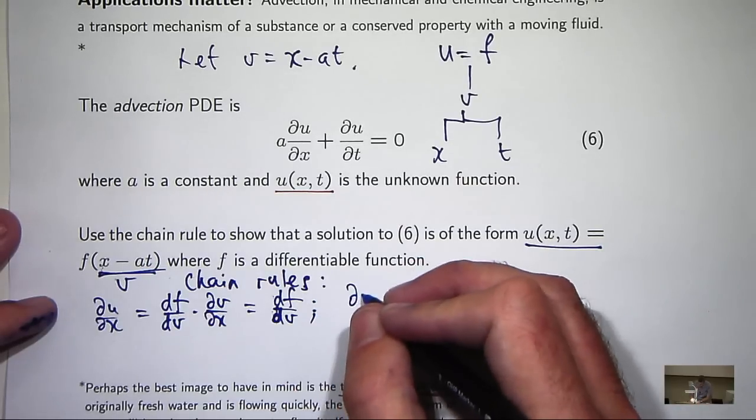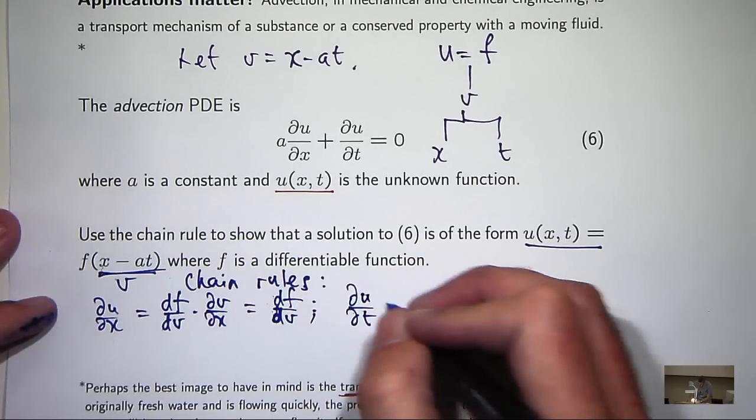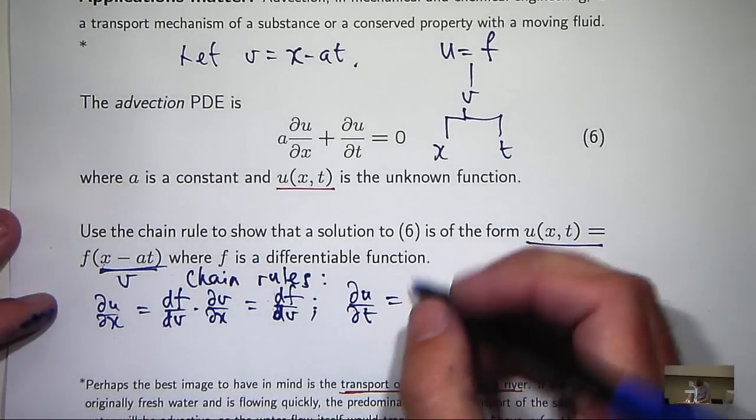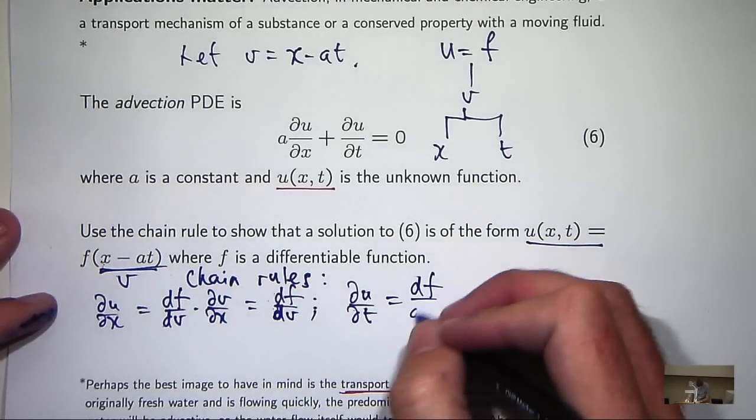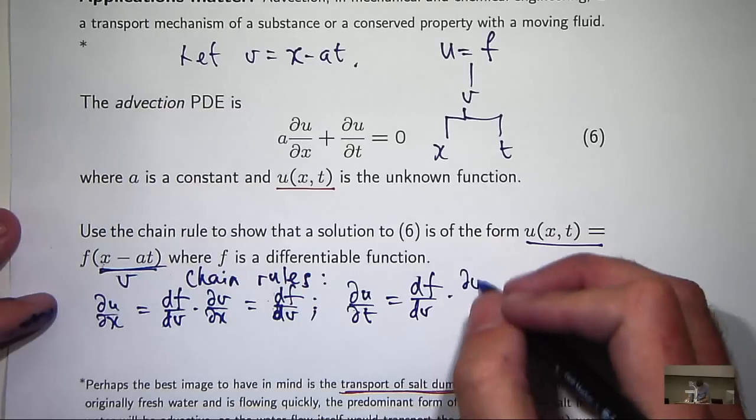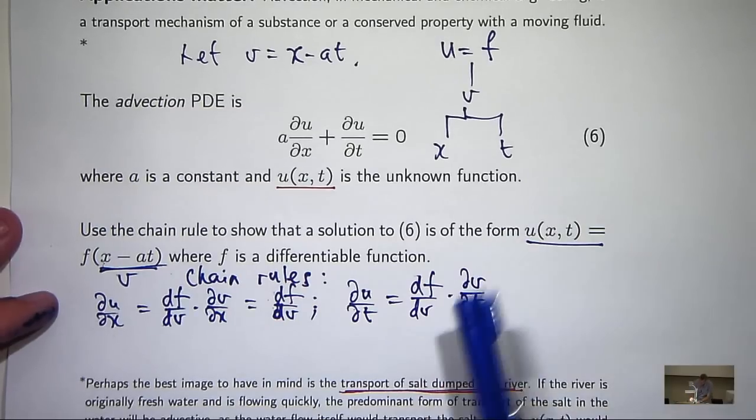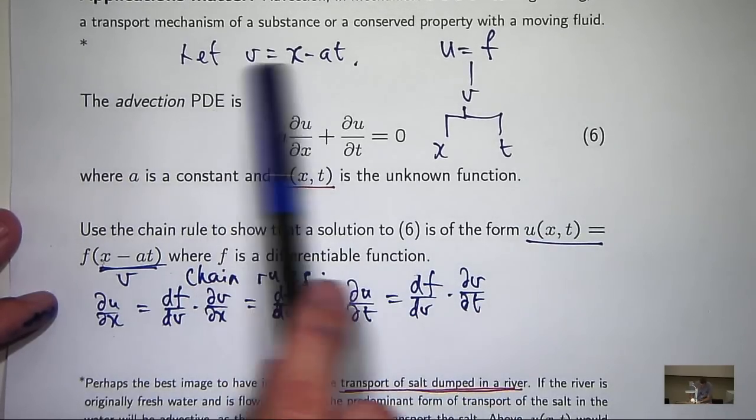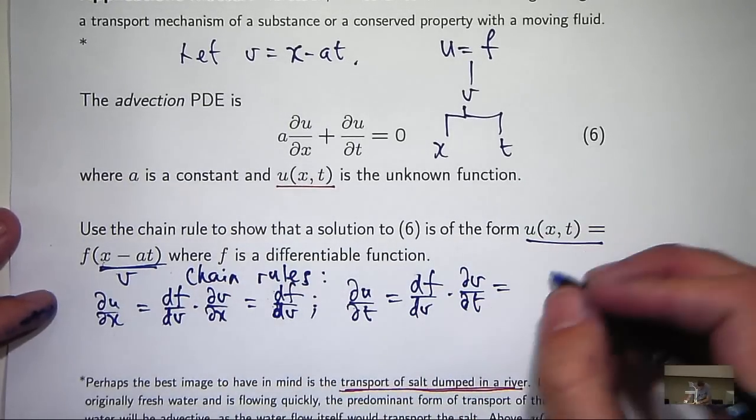What about du/dt? Well that's going to be df/dv times dv/dt. Again, I can't calculate this, but I can calculate this. dv/dt is going to be negative a.